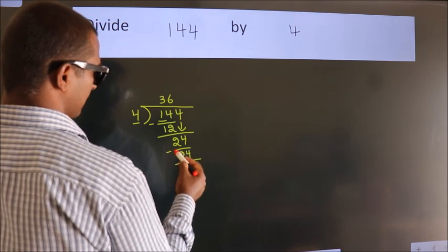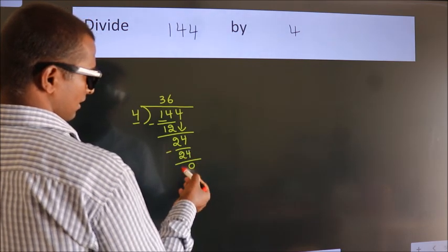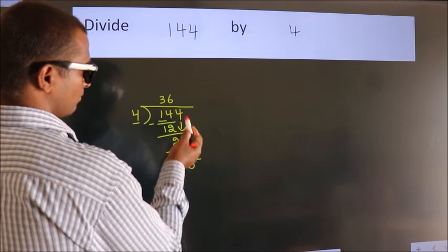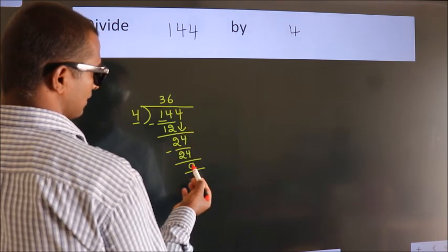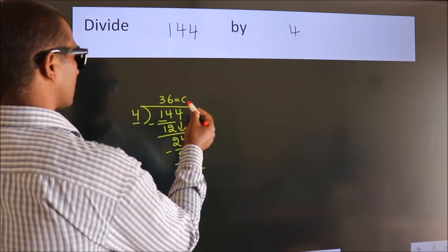Now, we subtract, we get 0. After this, no more numbers to bring it down. And, we got remainder 0. So, this is our quotient.